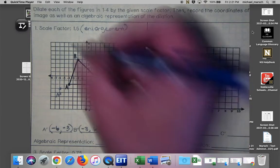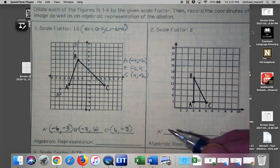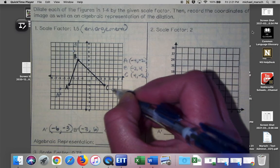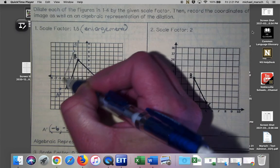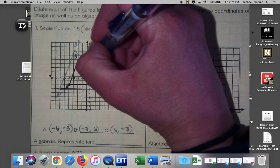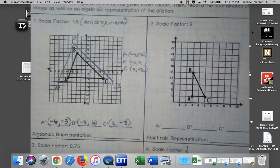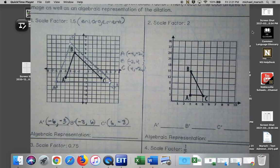Negative 3, 6 gives me B prime and 6 negative 3 gives me C prime. And I can connect those and make myself an enlarged by 1.5 triangle. Tada. Who's excited? We're doing dilation. Not terrible right?